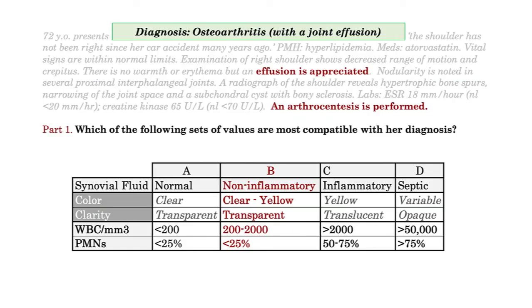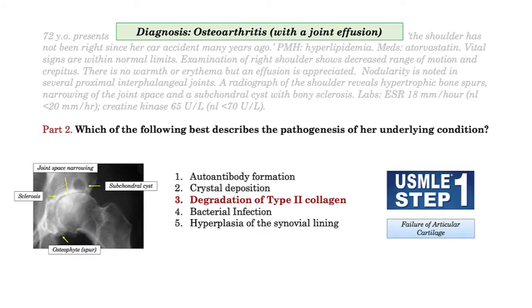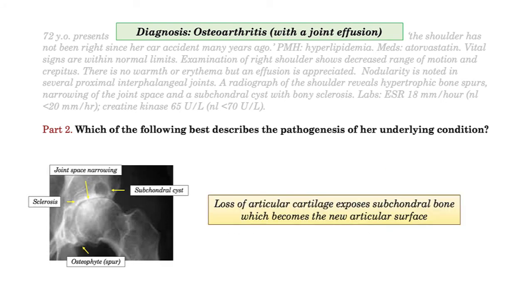Coming back to our case of osteoarthritis, the correct answer was B. Osteoarthritis is the prototypic non-inflammatory joint effusion. Moving along, this is a straightforward derivative based on the pathogenesis of osteoarthritis. It is a Step 1 derivative, but pathogenesis explains the pathology you need to know on Step 2. Here is osteoarthritis in a nutshell: loss of articular cartilage exposes the subchondral bone, which then becomes the new articular surface. All the radiographic findings reflect changes to that subchondral surface.